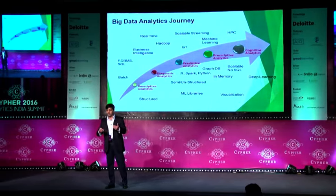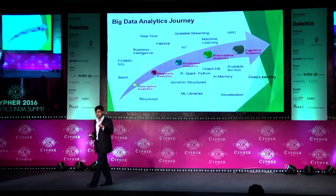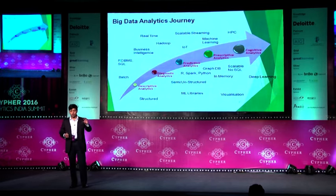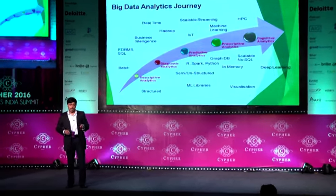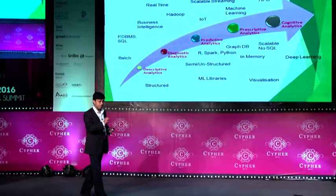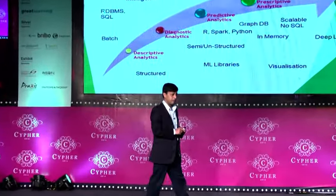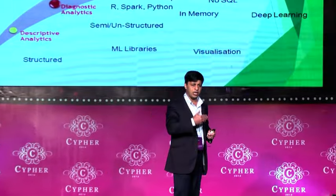Going forward, we should have systems that also prescribe: this is likely to fail, it requires these actions A through Z, these materials are required, these skilled engineers are required — please plan properly. This allows material planning and resource planning to happen, and that prescriptive model can be built over our large repository and history from the last 20 years. IBM is working on cognitive analytics, combining machine learning and artificial intelligence as it evolves.